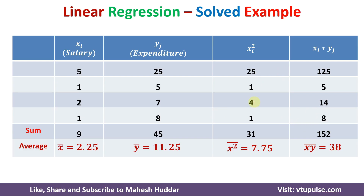First we calculate x²: 5×5=25, 1×1=1, and so on. Similarly, we calculate x*y: 5×25=125, 1×5=5, and so on. Once all values are calculated, we take the summation of x, summation of y, summation of x², and summation of x*y.